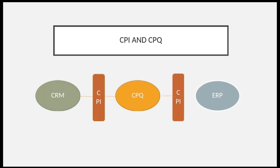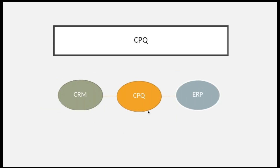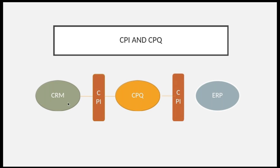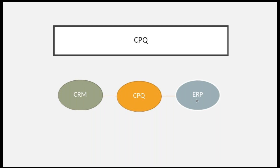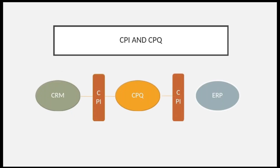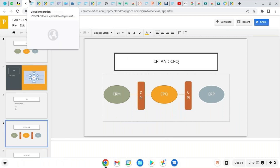As shown in the diagram, CPQ integrates with CRM and ERP, and they can integrate through CPI. You can see that between CRM and CPQ, CPI is there, and between CPQ and ERP, CPI is there again. So if CRM is trying to send data to CPQ, or CPQ is trying to send data to ERP, it happens through CPI.